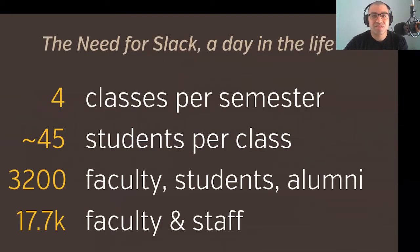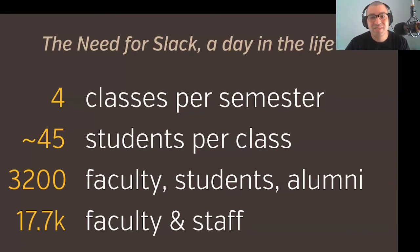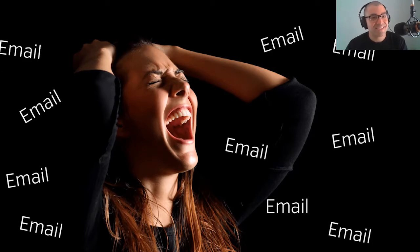In my case specifically: four classes per semester, which has become typical for a lot of teaching faculty, with about 45 students per class including online. Overall there are 3,200 faculty, students, and alumni in our graphic information technology major alone, all with communication needs. Throughout the university there are almost 18,000 faculty and staff. When you talk about these numbers, you're almost always talking about email — being bombarded from every direction on every topic. It's the default communication system for a large organization, but not the greatest.